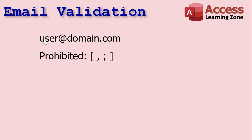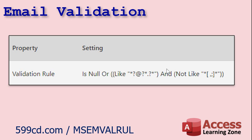You have to have at least one character out here but any number of them. The username part technically can only be 64 characters long, though whoever has a 64-character username. Then there's the at sign and then the domain name — 599cd.com, accesslearningzone.com, whatever. And it can't be like: it can't have a square bracket either one, a comma, or a semicolon. There are more disallowed characters, but those are the most popular ones. There are other characters you can't use according to most email services, but those are the ones Microsoft decided to put in their formula, so we're going to stick with them for right now.